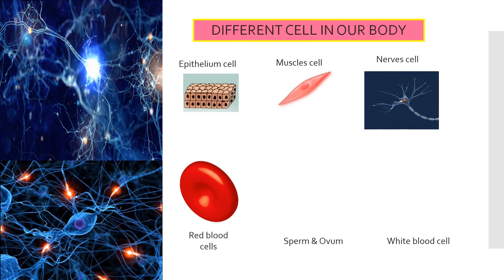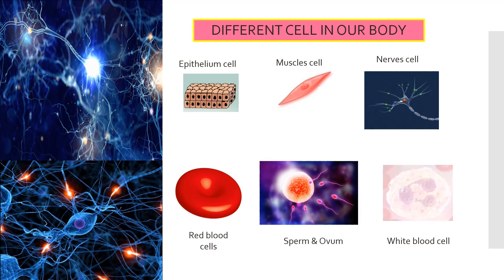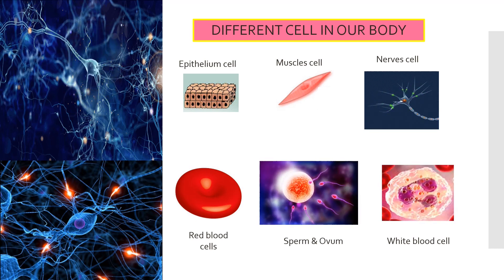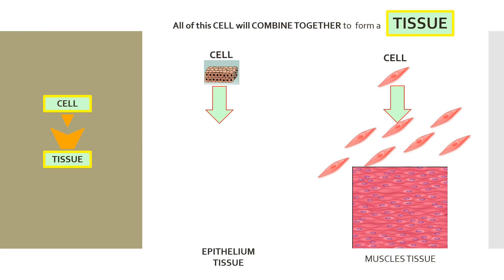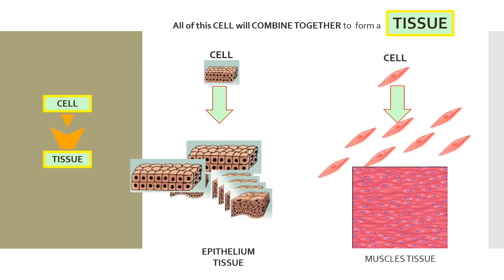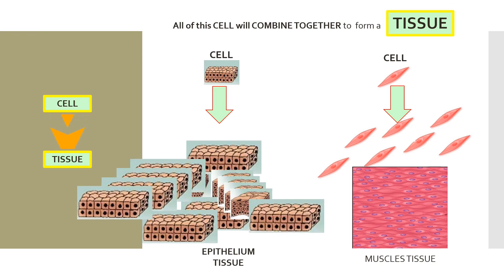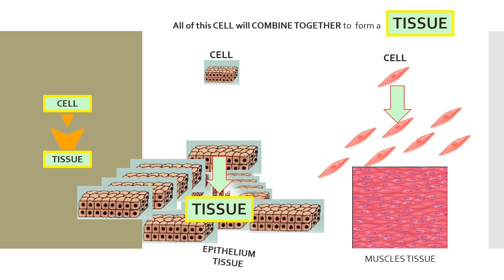This is all of the human cells. All of these cells have their own specific functions. All of these cells will combine together to form a tissue. Epithelium cells combine together to form epithelium tissue.